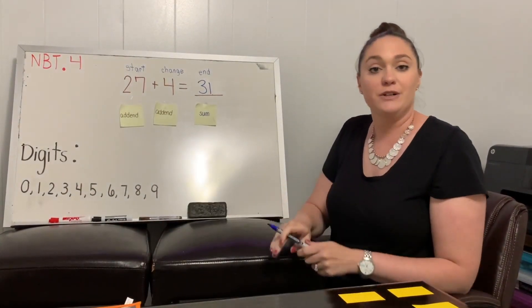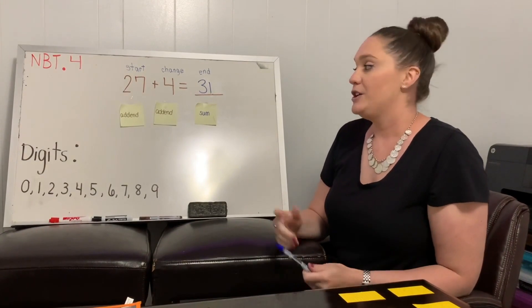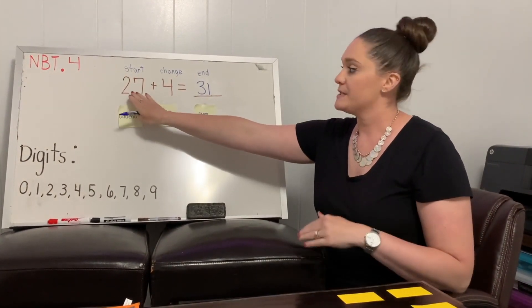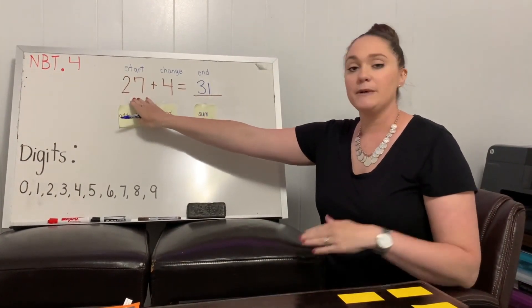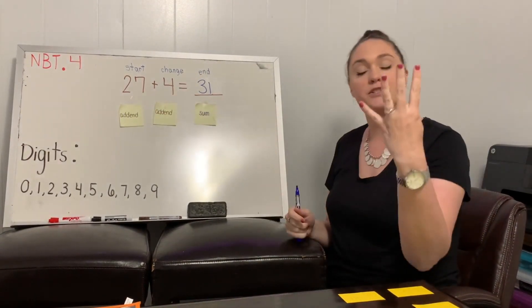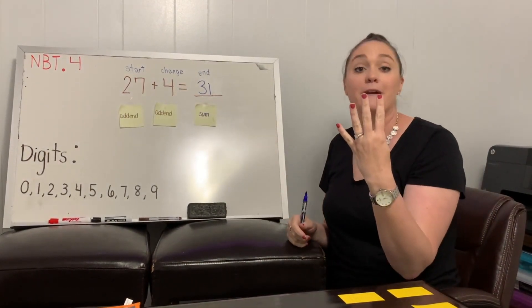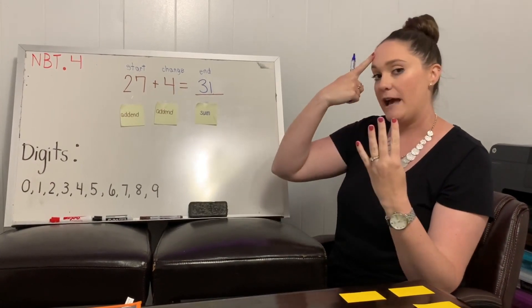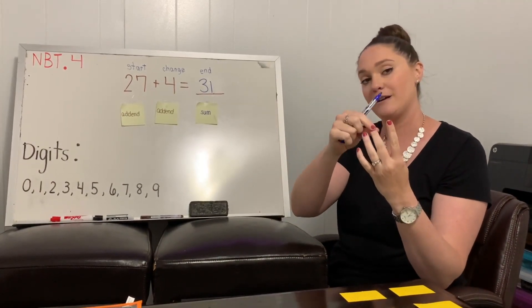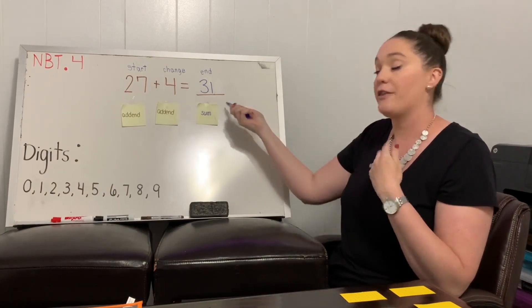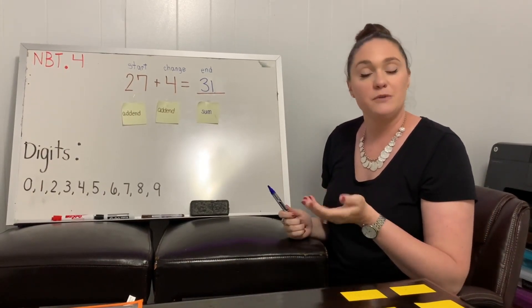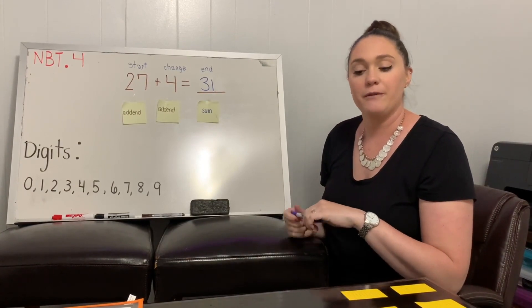There's another strategy you could have used — you could have counted on. So same sort of steps: 27 is where we start, that's already in my head. But I'm adding 4, so I'm going to show that 4 with my fingers this time. 27, 28, 29, 30, 31. We got 31 no matter which strategy we use. You can use whichever strategy you're most comfortable with.